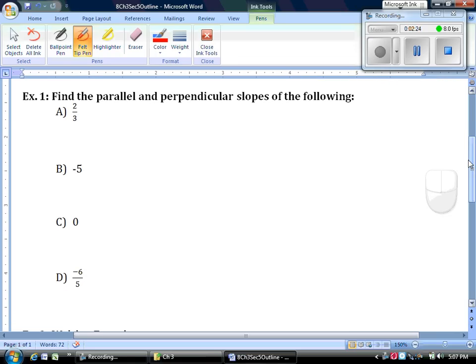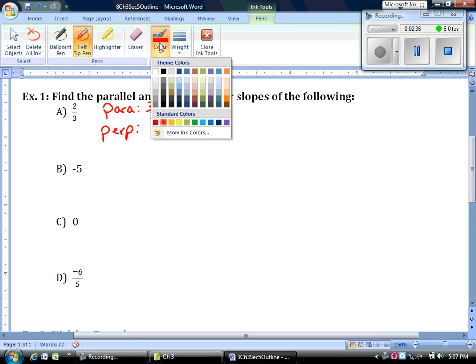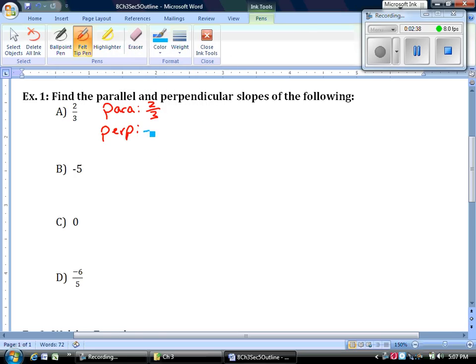A parallel slope to two-thirds is two-thirds, it's the same. A perpendicular slope to two-thirds is going to become negative three over two. I change it from positive to negative and I flip it.